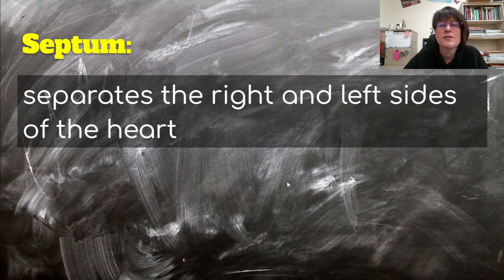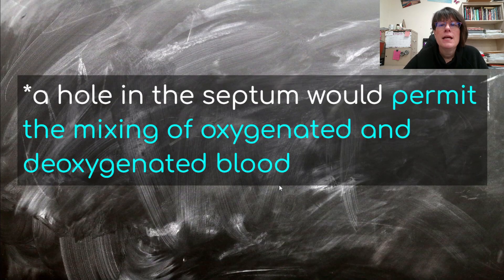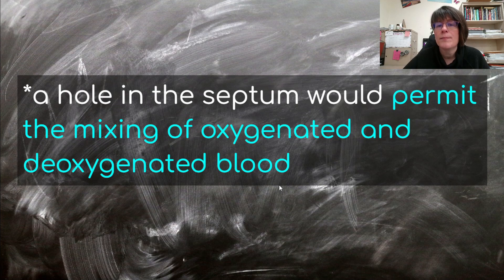There's also the septum. It separates the right and left sides of the heart. We can see the septum running through the heart. If there is a hole in the septum, it would permit the mixing of oxygenated and deoxygenated blood. Sometimes children are born with a hole in the septum. Many times that hole does close up, but sometimes surgery is needed to correct the problem.